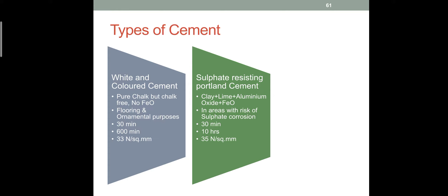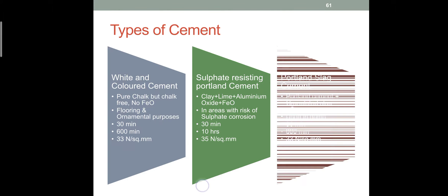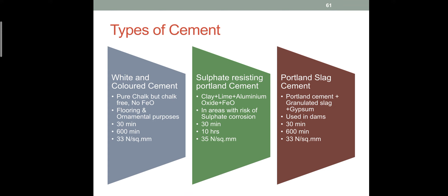Sulphate resisting Portland cement is designed to resist sulphate attack. In most industries, sulphate is present in effluent outflow, which causes more corrosion. The ingredients are mostly normal, except aluminium oxide content is more — making it very similar in composition to high alumina cement.